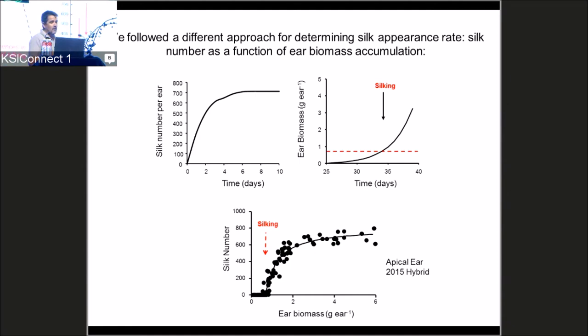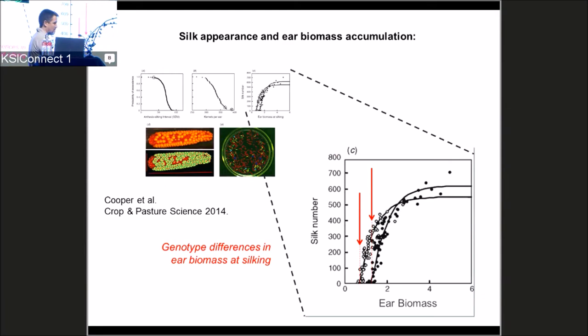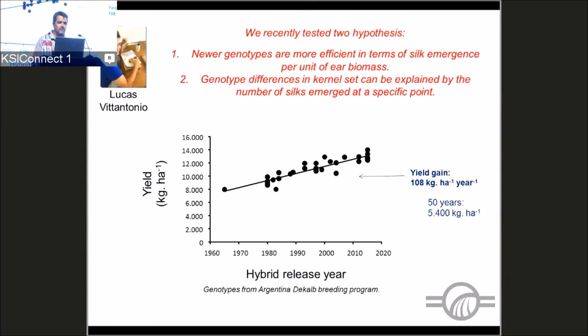This is not entirely new — Pioneer has already published this. They show that different genotypes differ in drought response: the drought-tolerant genotype reaches silking with less ear biomass, meaning it is more efficient — with less ear biomass, it is already extruding silks. So there is an intrinsic differential efficiency when comparing genotypes. We tested two hypotheses: whether newer genotypes are more efficient in silk emergence per unit of ear biomass, and whether we could predict kernel number based on the number of silks appearing within that specific three-day time window.